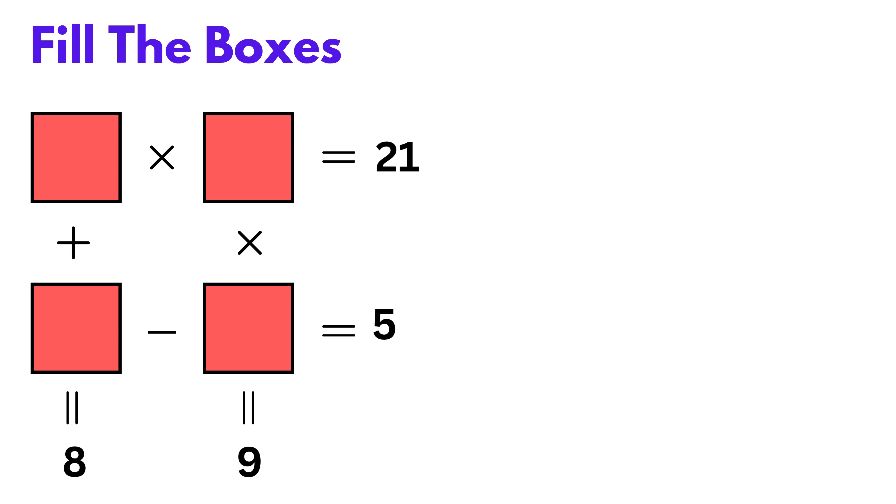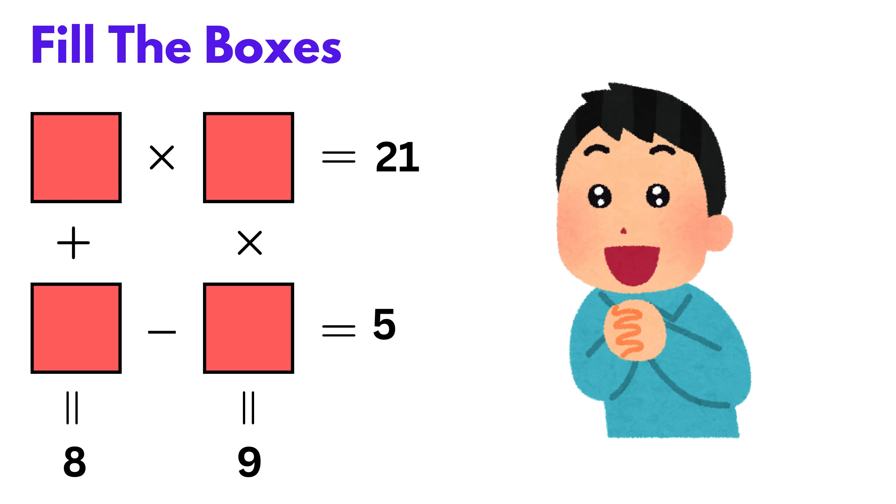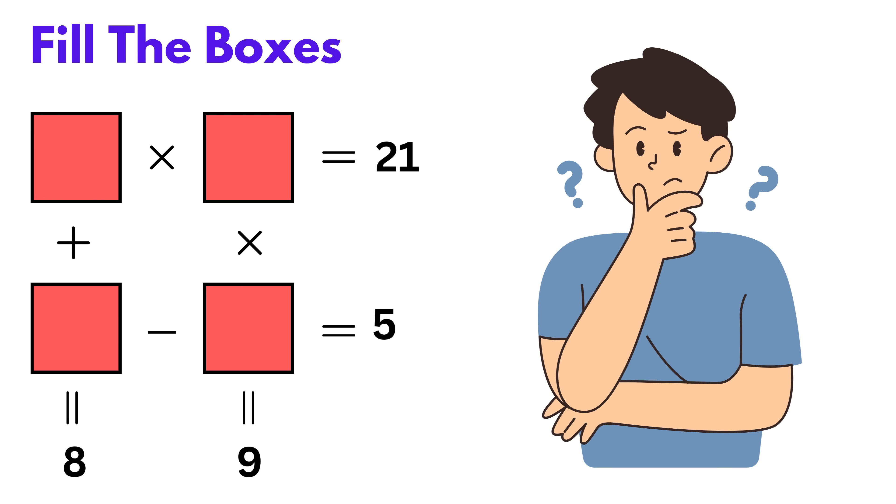Today we'll be working on this fun little puzzle. The goal is to fill in four boxes with numbers such that when we perform simple math operations on them, we get specific results: 21, 9, 5, and 8 like this. Sounds interesting, right? So, how to solve it?